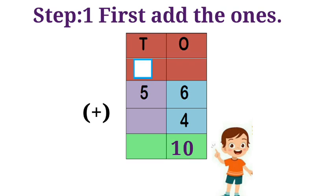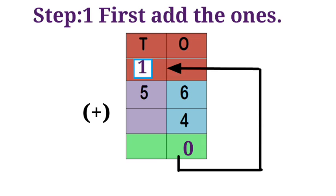Use the regrouping method. Write zero in the ones column. Carry over one to the tens column.